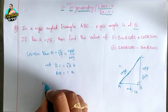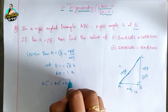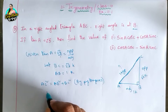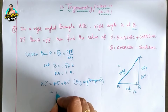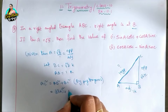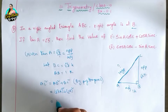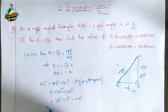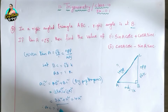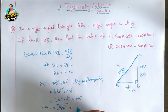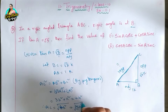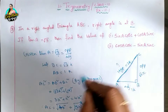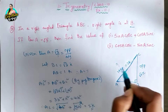By Pythagoras theorem, AC² = AB² + BC². So AC² = (root 3·K)² + (1·K)² = 3K² + K² = 4K². Therefore AC = square root of 4K² = 2K. So AC is equal to 2K.